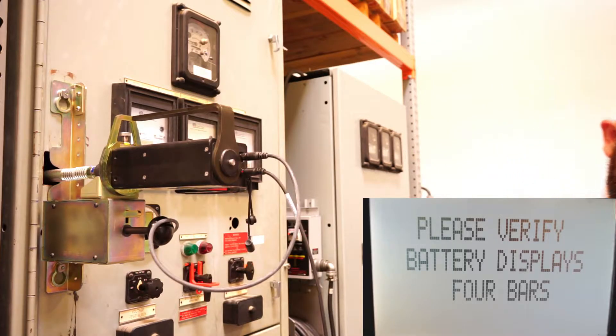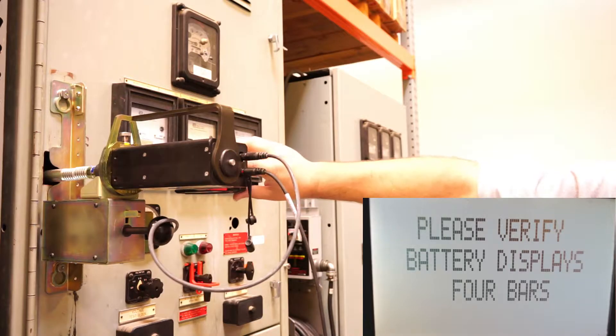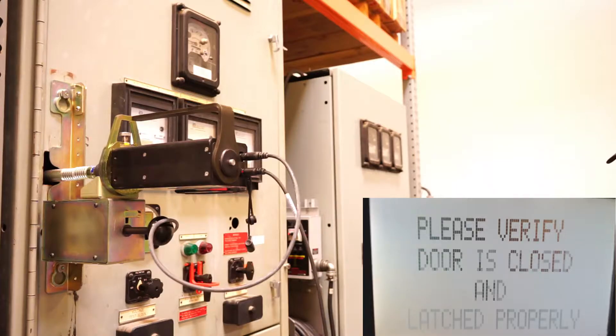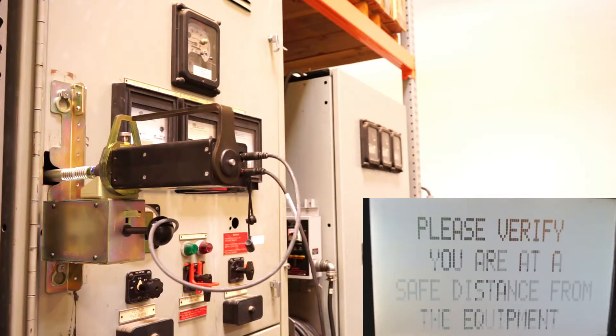The first screen you're going to see, please verify battery displays four bars. On the front of the battery, there's a button with a display. Next screen, please verify door is closed and latched properly. So this is just kind of a mental checklist for operators or electricians before they actually rack this breaker. Verify you're at a safe distance from the equipment.